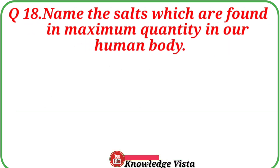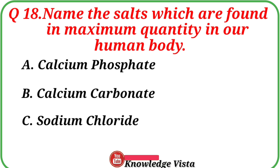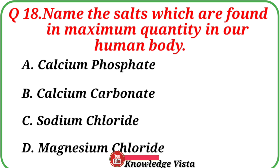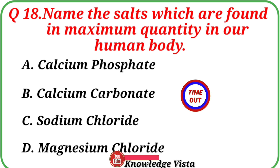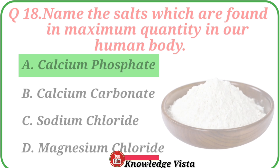Question number 18: Name the salts which are found in maximum quantity in the human body. Your options are: A. Calcium phosphate, B. Calcium carbonate, C. Sodium chloride, D. Magnesium chloride. Correct answer is option A, Calcium phosphate. Calcium phosphate is found in maximum quantity in the human body.